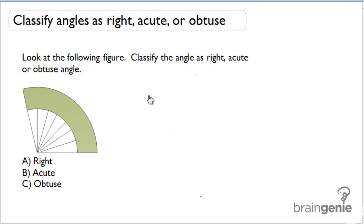In order to classify an angle, we must first decide whether it's right, acute, obtuse, or even a straight angle.